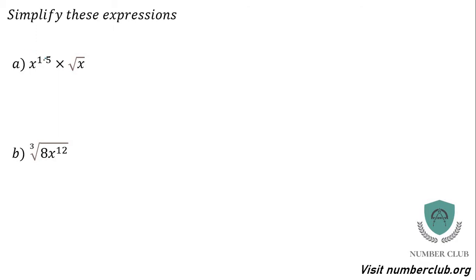The first thing you need to know is that if you've got a decimal index, you should really change that to a fraction if possible — you'll get x to the power of 3 over 2. Now, if you have x to the power of m over n, you should be able to give this in root form and reverse it. Root form is the one with a root in it, and power form is the one that's just got a power in it.